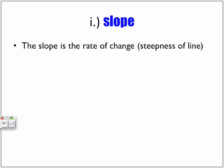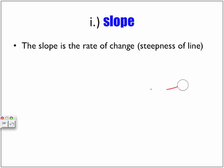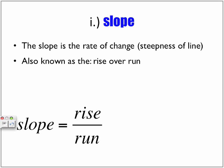Slope. The slope is the rate of change — it's the steepness of a line. If we have one line and a second line, the slope of one can be a lot steeper than the slope of the other. Slope is also known as the rise over run. The slope is equal to rise divided by run, and we're going to talk about what those terms mean.